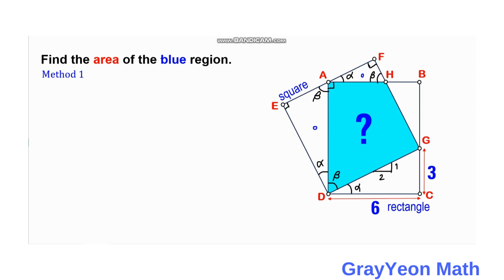Next, we notice that triangle GCD is actually similar to the other two triangles AFH and AED. This angle is of course the complement of alpha, which is beta, because it is from a rectangle — a right triangle. Knowing that these three triangles are similar, the ratio of the legs of these three triangles is 2 to 1, just as we have on triangle GCD.